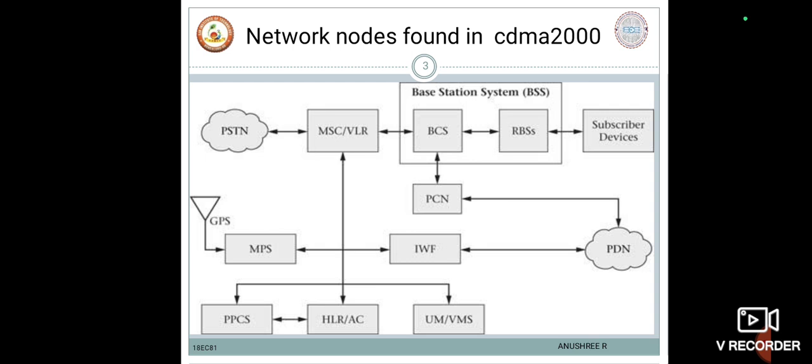The HLR also contains details of the subscriber service plan, any service restrictions, and the identification of the MSC where the mobile was last registered. The AC provides a secure database for the authentication of the mobile subscribers when they first register with the system and during call origination and termination. The AC uses shared secret data for the authentication calculations, and both the AC and SD calculate SSD based on the authentication key or A-key.